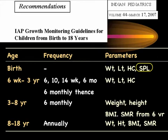Subsequently, growth measurements should include weight, length, and head circumference during routine immunization visits and at six months, followed by monitoring every six months between three to eight years. Six-monthly assessment of weight and height should be plotted on a growth chart including parental expectation. Sexual maturity rating should be assessed from six years onwards, particularly in girls due to precocious puberty risk, and BMI from eight to eighteen years. For children with normal growth pattern, annual assessment is sufficient.